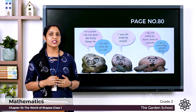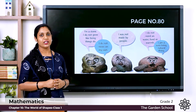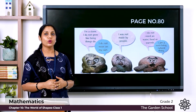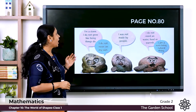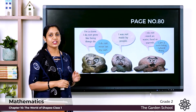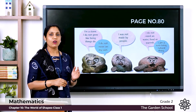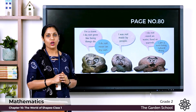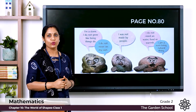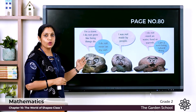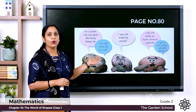Let's look at page number 80 in your textbook. There is a picture of a stone describing itself. It says: 'I am a stone. I do not grow like living things. I do not move on my own.' So a stone is a non-living thing — it cannot grow on its own and does not need food to grow.